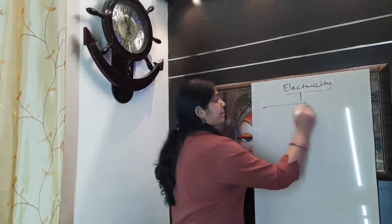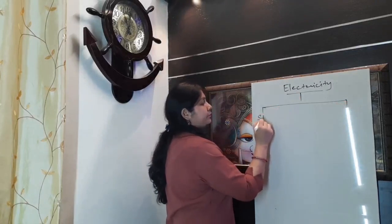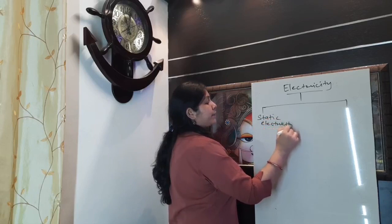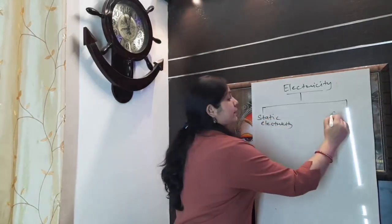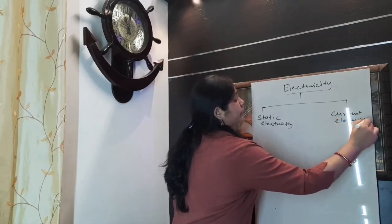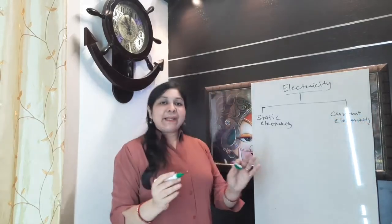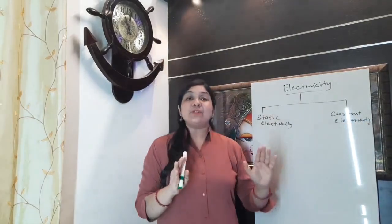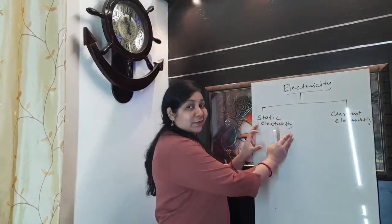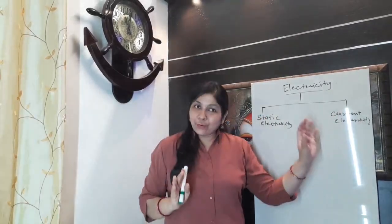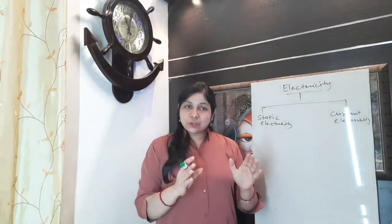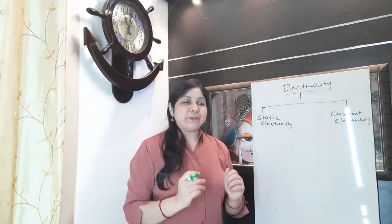So accordingly we divide electricity into two parts. First is static electricity and second is current electricity. Electricity is the presence or flow of charges. Here we will discuss presence of charges, and here we will discuss flow of charges. So electricity is practically the presence or flow of charges through an object.